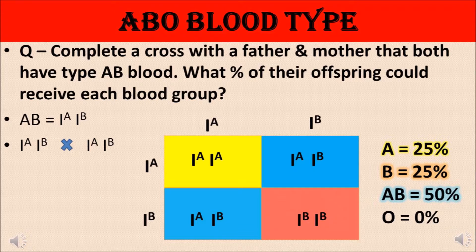After the cross, the offspring chances are: type A blood is 25% with genotype I^A I^A; type B blood is 25% with genotype I^B I^B; and type AB blood group is 50% with genotype I^A I^B. In the AB blood group, both alleles are dominant and both are expressed equally, which demonstrates co-dominance. None of the children will get type O blood.